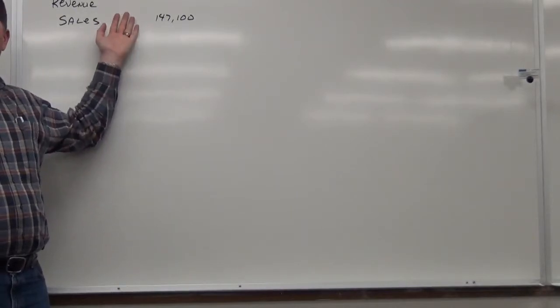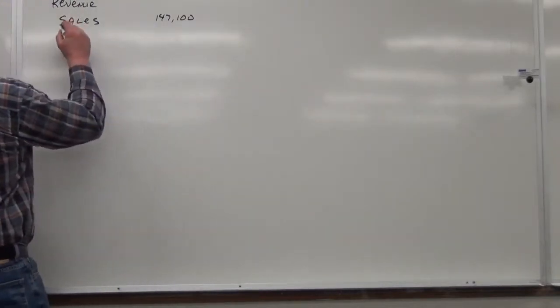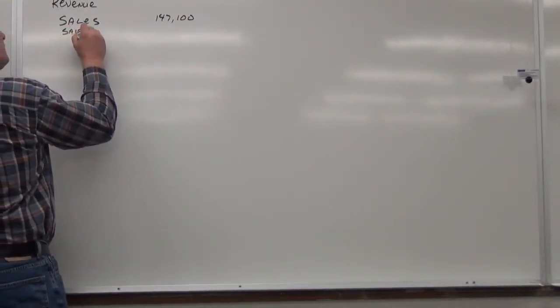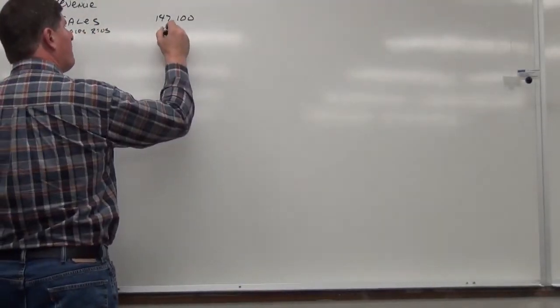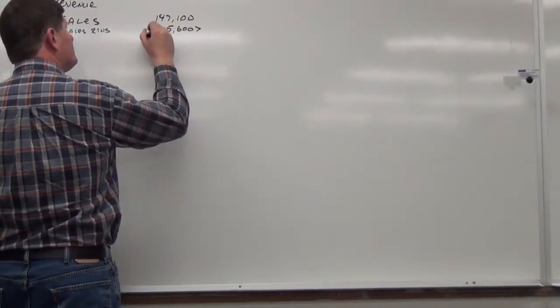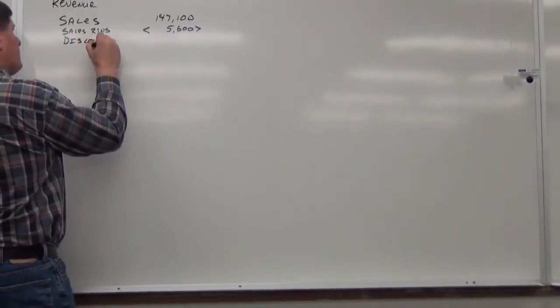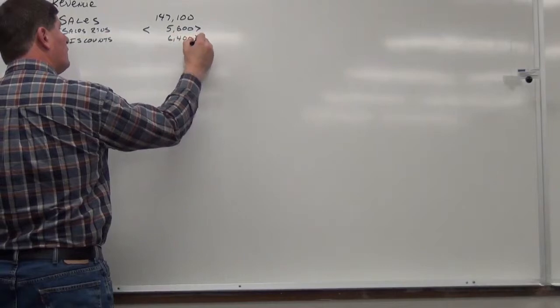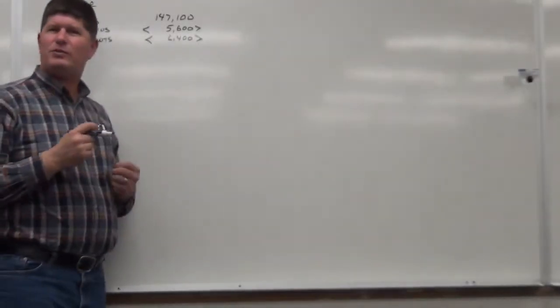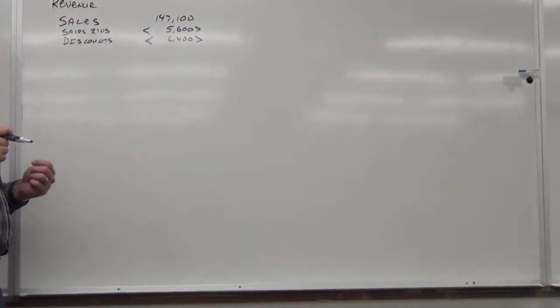Sales revenue. Okay. We have sales. How much is that? $147,100. Okay. So, I'm good, right? Is that everything? No. No. So, we need to derive net revenue from this. This is gross sales. Are there other sales accounts? No. No? Okay. So, what are our contra accounts that go with this?